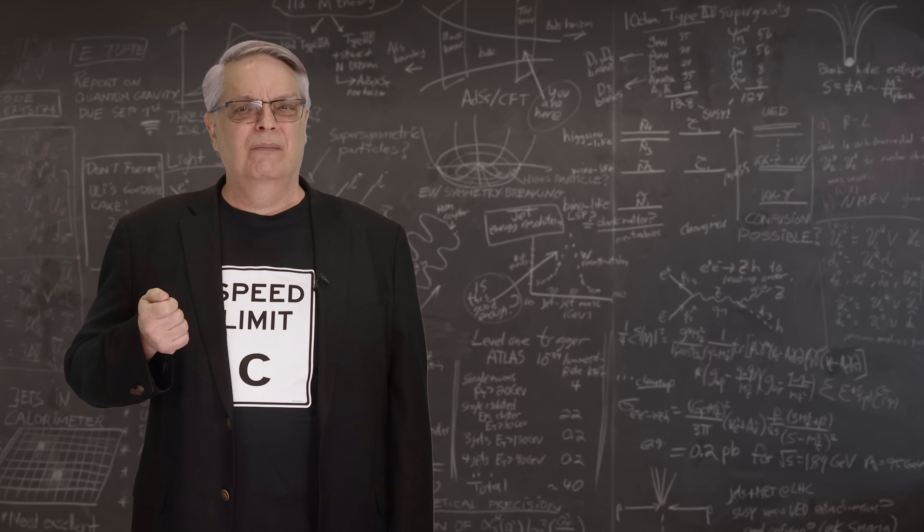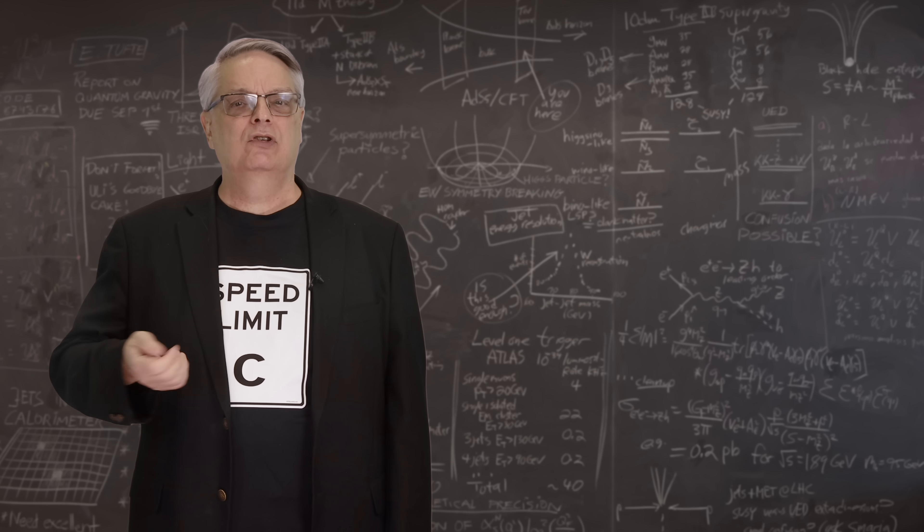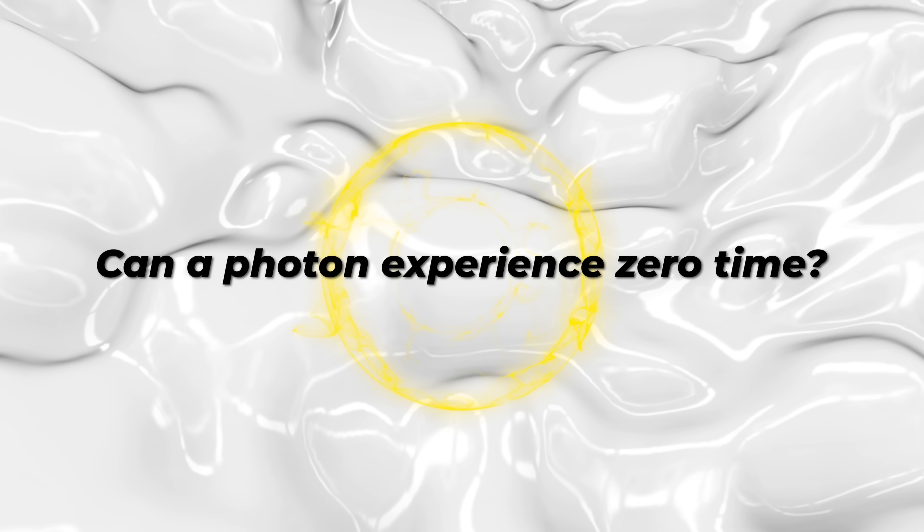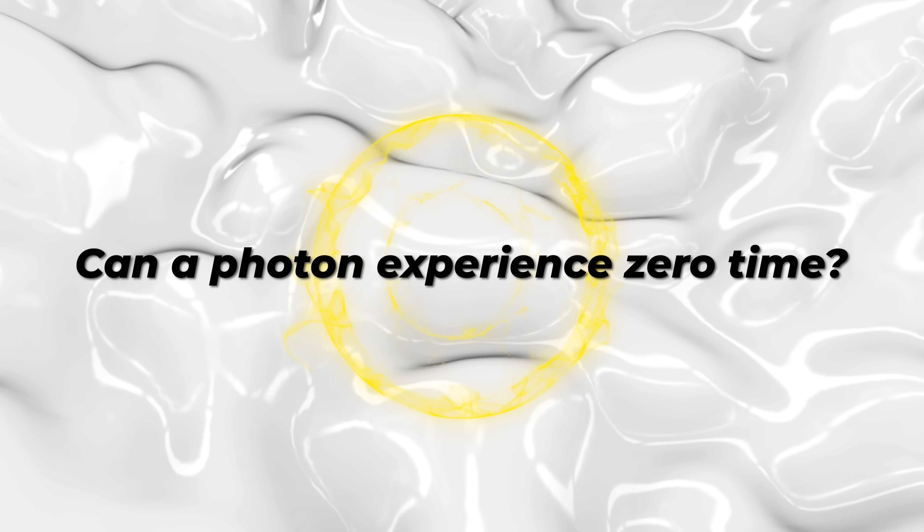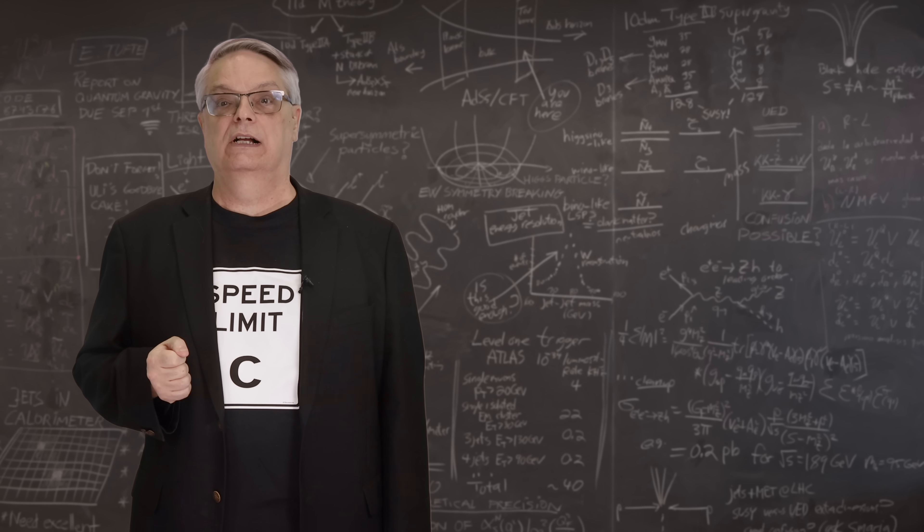If it's true that a moving clock ticks more slowly than a stationary one, and a photon moves at the speed of light, is it possible that the photon is moving so fast that no time is experienced? To get a handle on that, we first need to understand two important concepts.